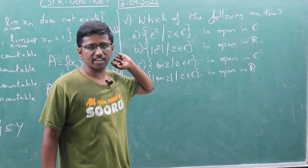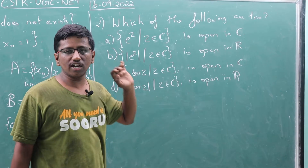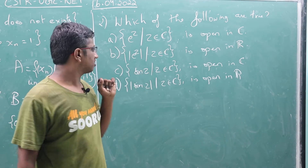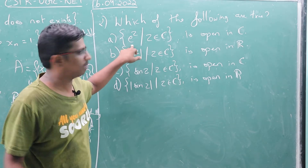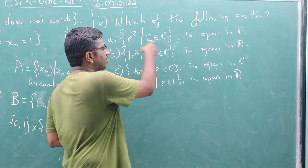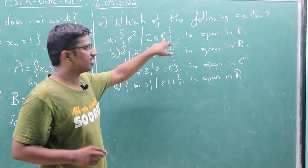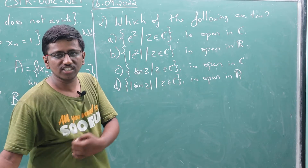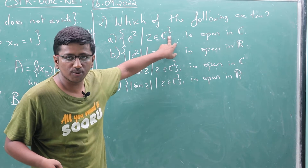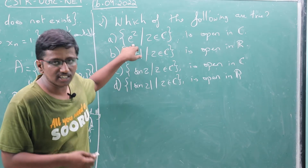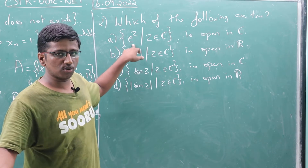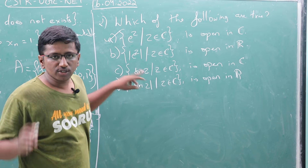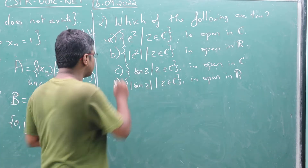This is a direct application of the Open Mapping Theorem. The open mapping theorem states that a non-constant analytic function maps open sets to open sets. If we have the function f from C to C given by e^z — C is an open set — then e^z maps it to an open set. By the open mapping theorem, e^z is entire and non-constant analytic, so open set maps to open set. C is open and the image remains open. Similarly, sin(z) is entire, so sin(z) maps open sets to open sets.